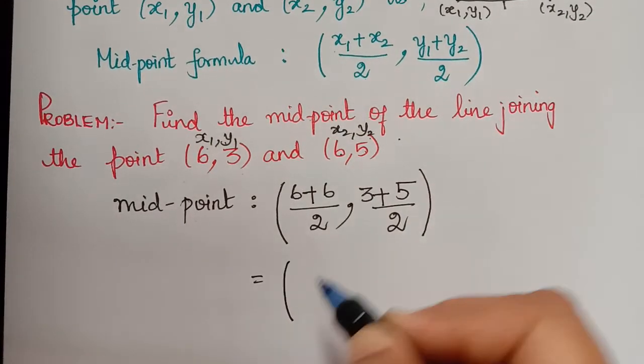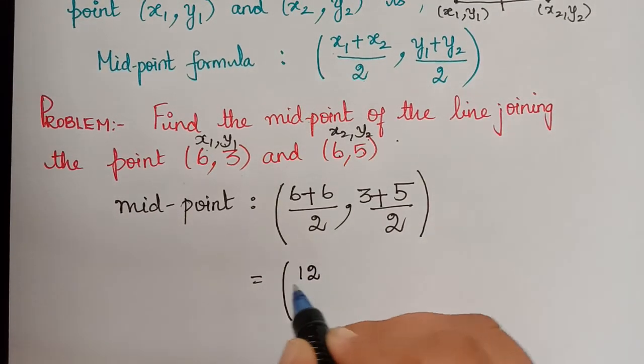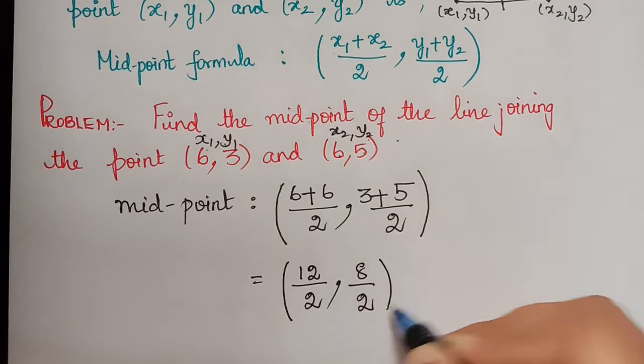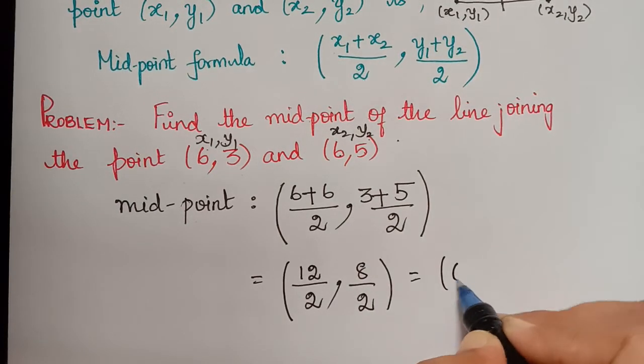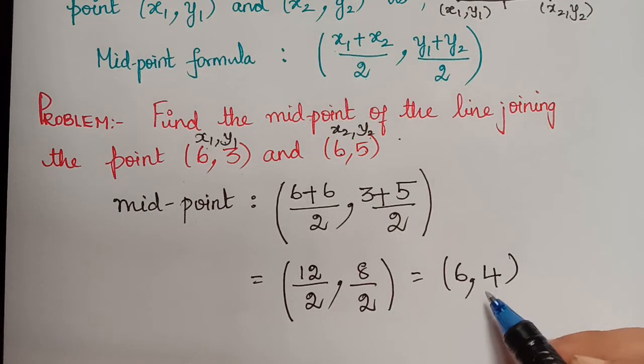And so that will be, what is 6 plus 6 divided by 2? That is 6 plus 6 is 12, so 12 by 2, and 8 by 2. And so that will be 6 comma 4.